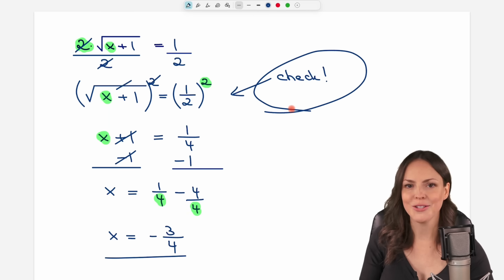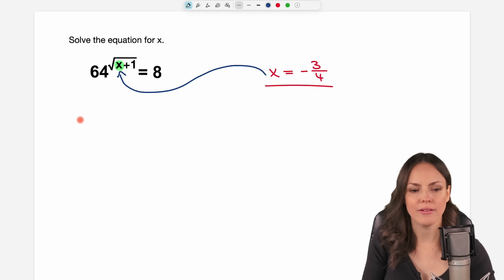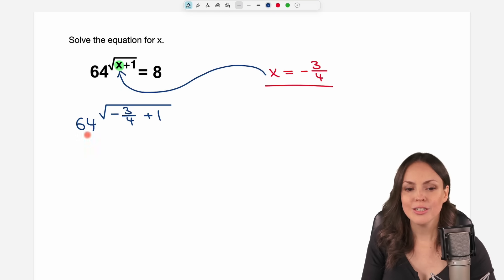Let's take our result and insert it here for our x. On the left side, we have 64 to the power of the square root of, for our x we insert the negative 3 over 4, we add the 1, and now let's calculate this and see if we get 8 as a result.